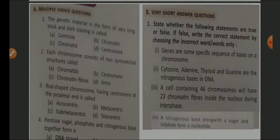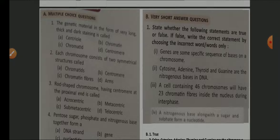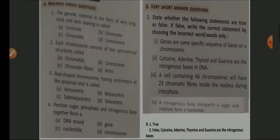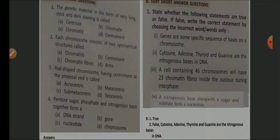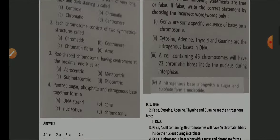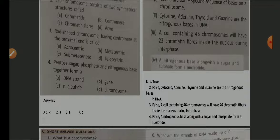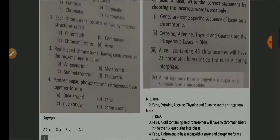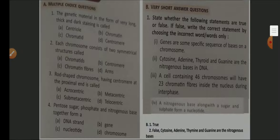First, multiple choice questions: genetic material is in the form of very long, thick, and dark-staining structures — the answer is chromatid. Each chromosome consists of two symmetrical structures called chromatids. Rod-shaped chromosomes having centromere at the proximal end are called acrocentric. Pentose sugar, phosphate, and nitrogenous base together form a nucleotide.